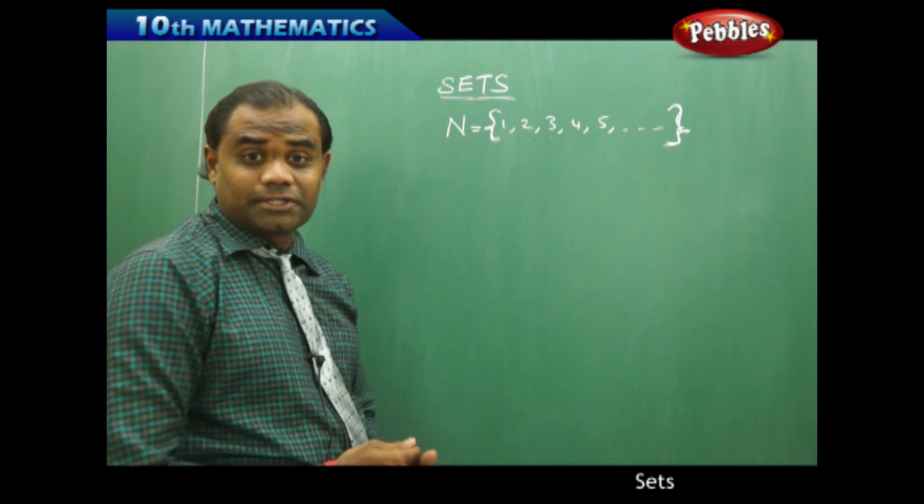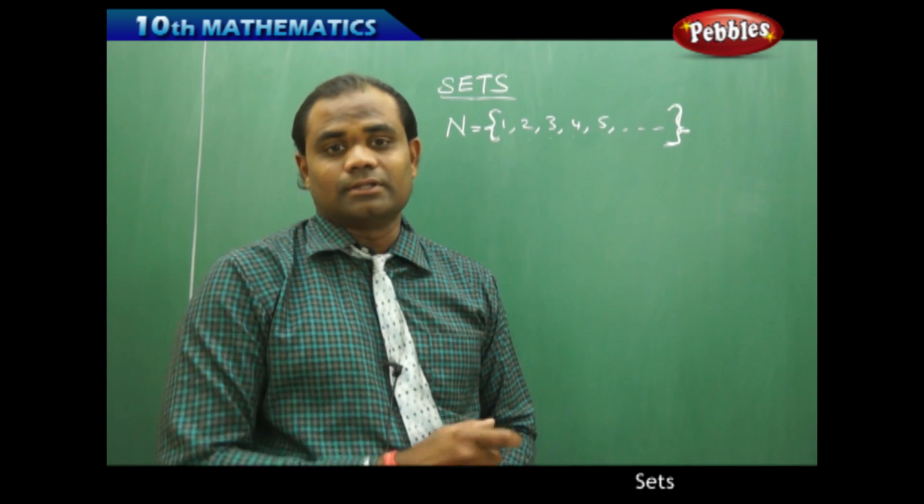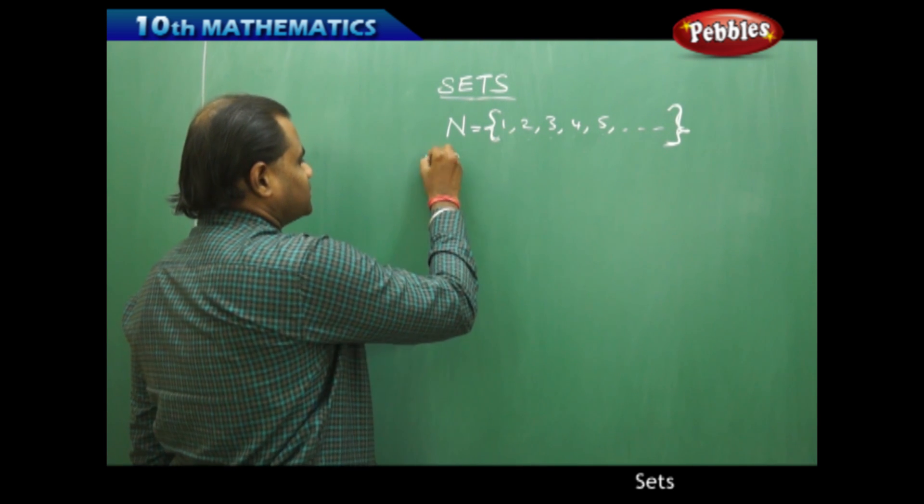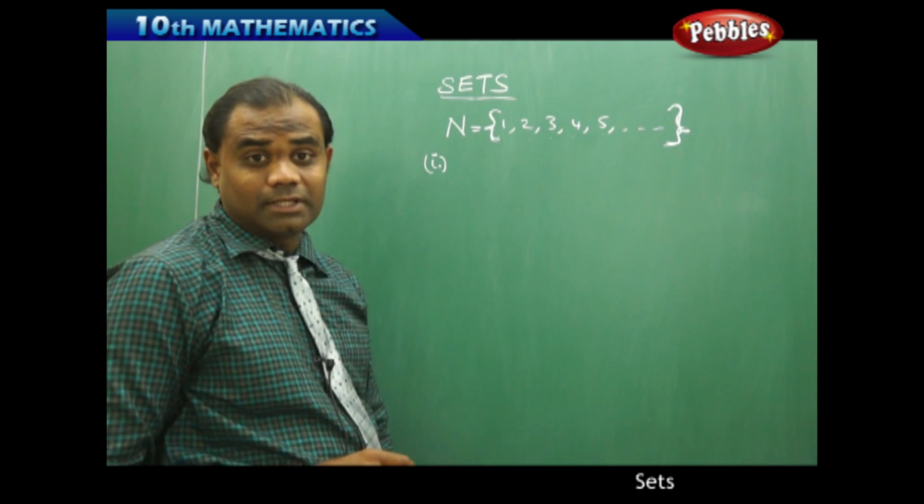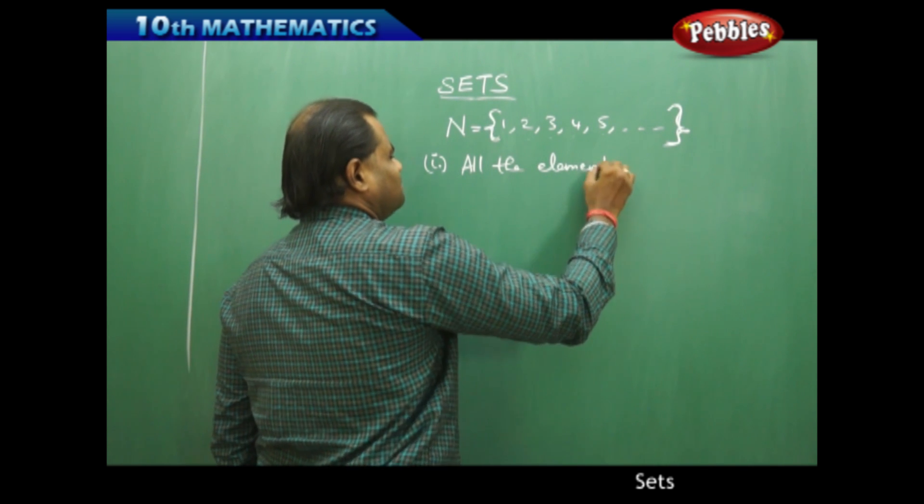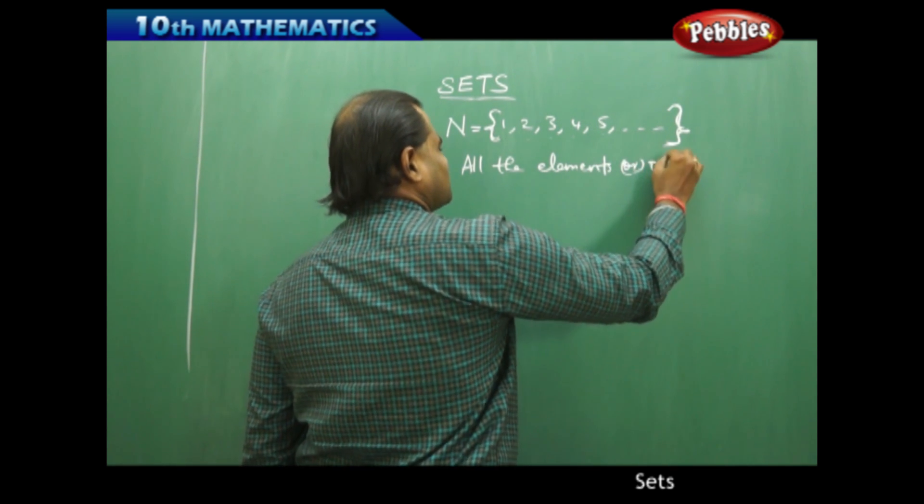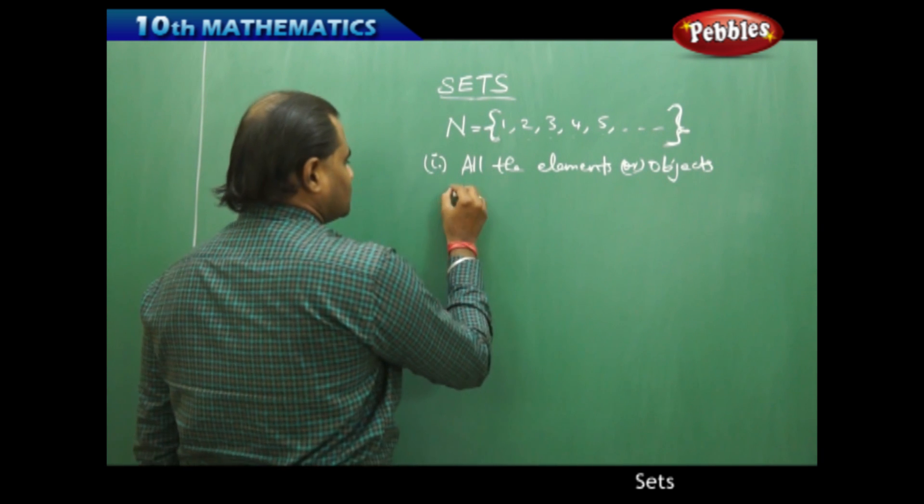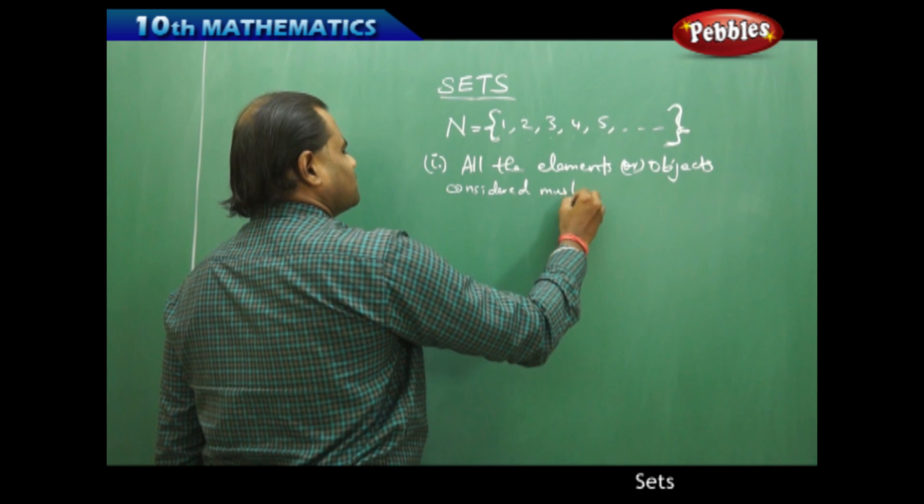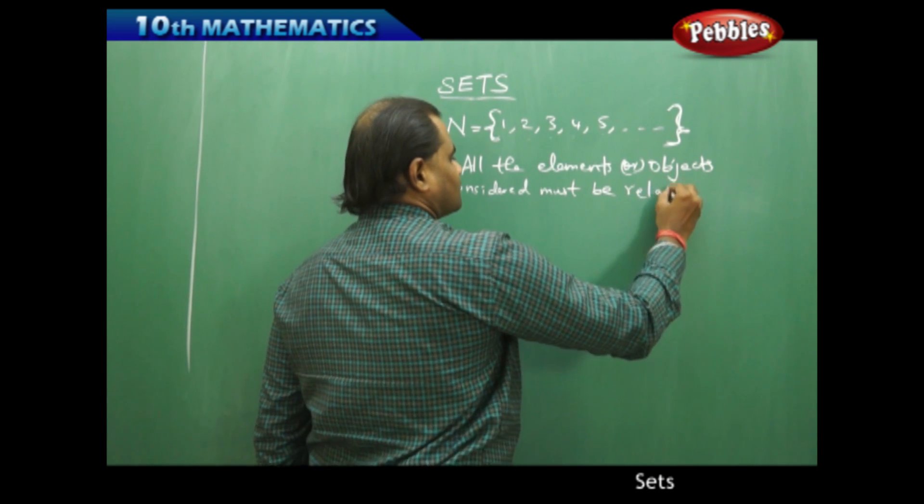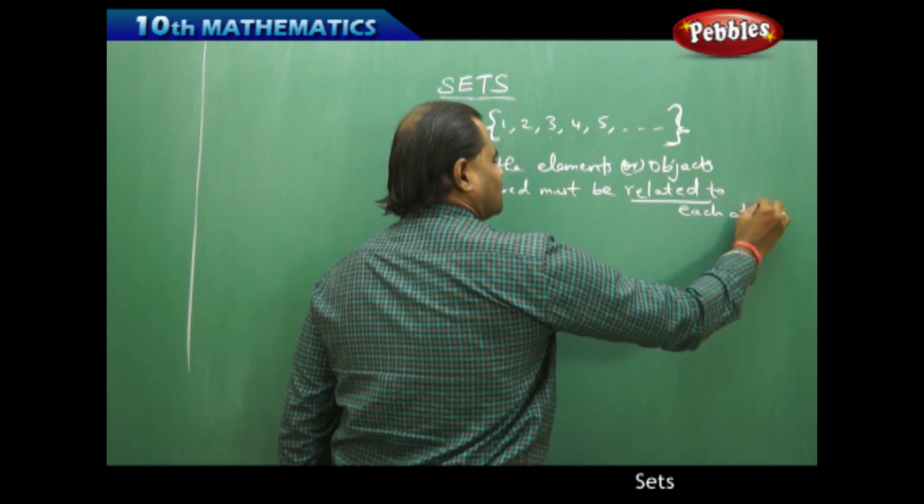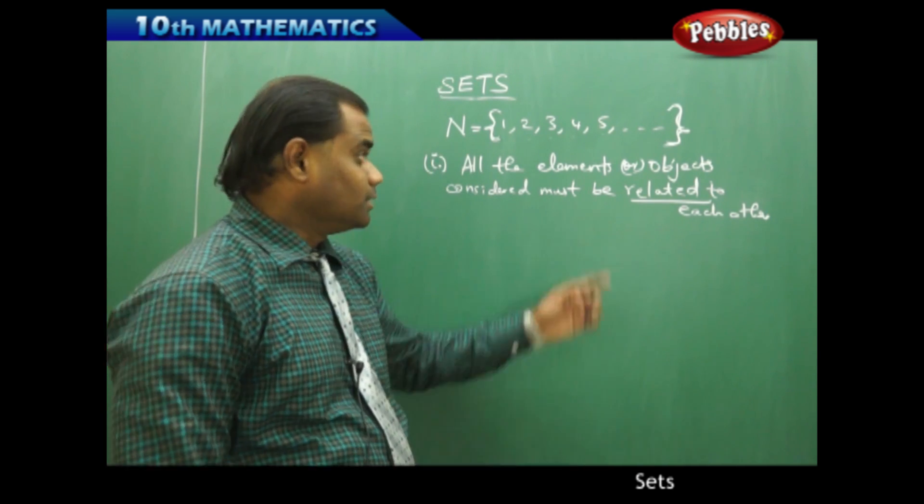Let's see what are the two restrictions which limit the defining of a set. Firstly, when I go with the definition my first limitation is that all the elements or objects considered must be related to each other. So they must be related to each other.